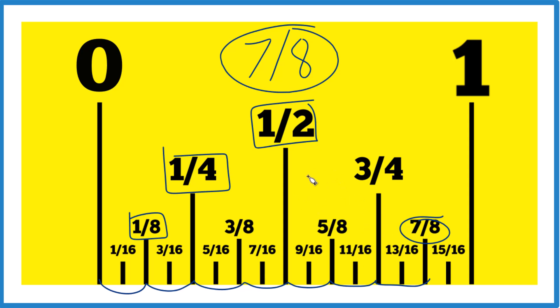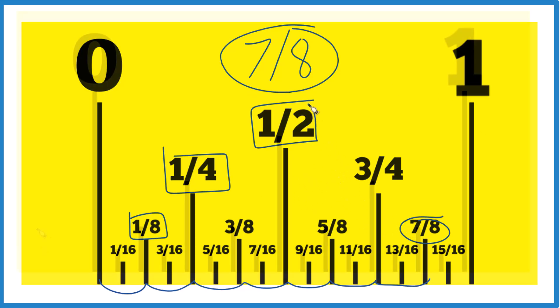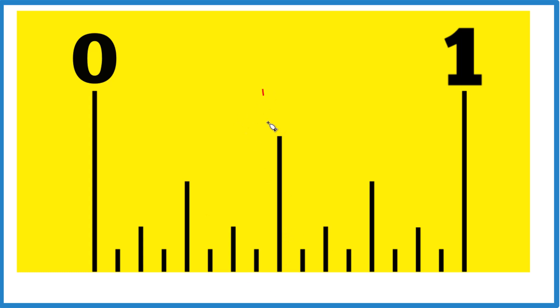So let's try this again on a blank ruler. So we know right down the middle we have one-half, and if we cut our one-half in half, we get one-fourth. Cut that in half again, we get one-eighth. And you could even go down to one-sixteenth here.